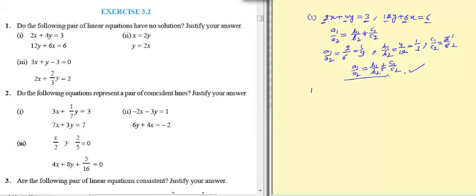Now second part, x equal to 2y, this is the first one. And y equal to 2x, this is the second equation. On simplification we get x minus 2y equal to 0 and 2x minus y equal to 0.